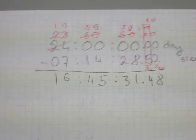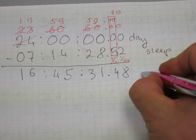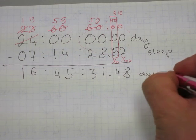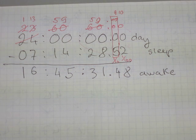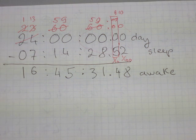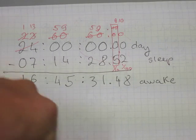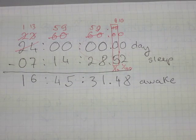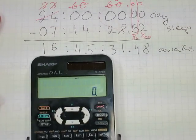My answer to this subtraction: how much time does an apprentice have in a day to spend awake, improving, and excelling? If you sleep 7 hours, 14 minutes, and 28.52 seconds, you will have 16 hours, 45 minutes, and 31.48 seconds to spend on bettering yourself.